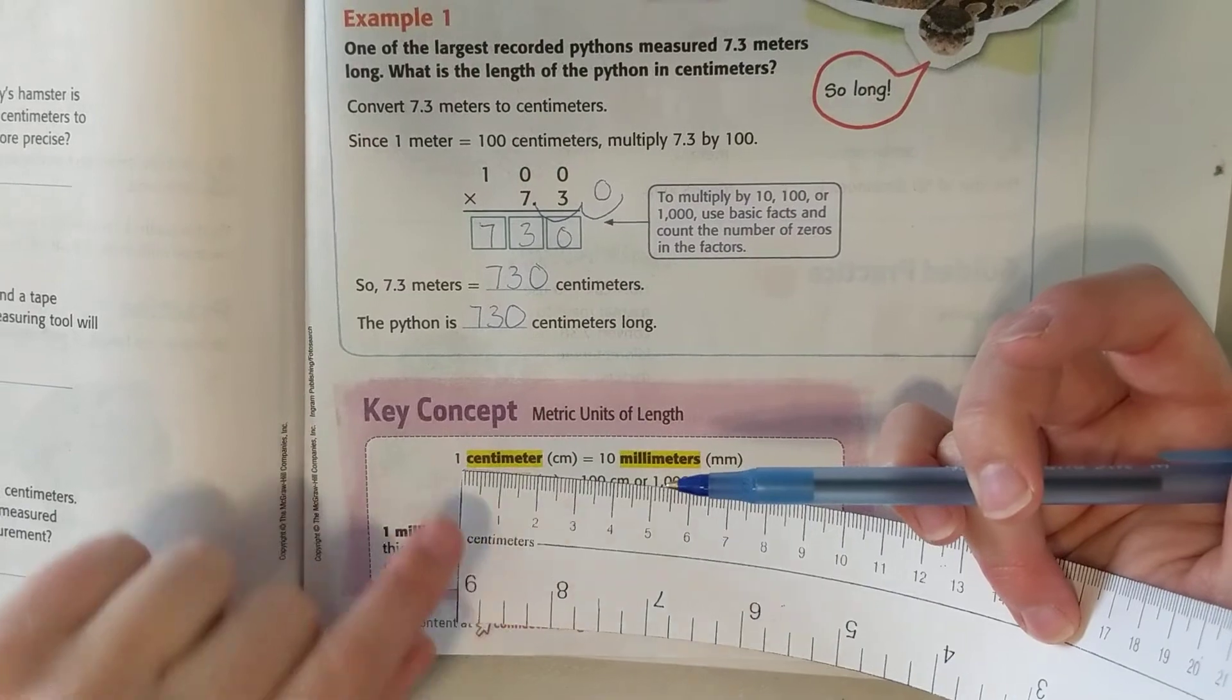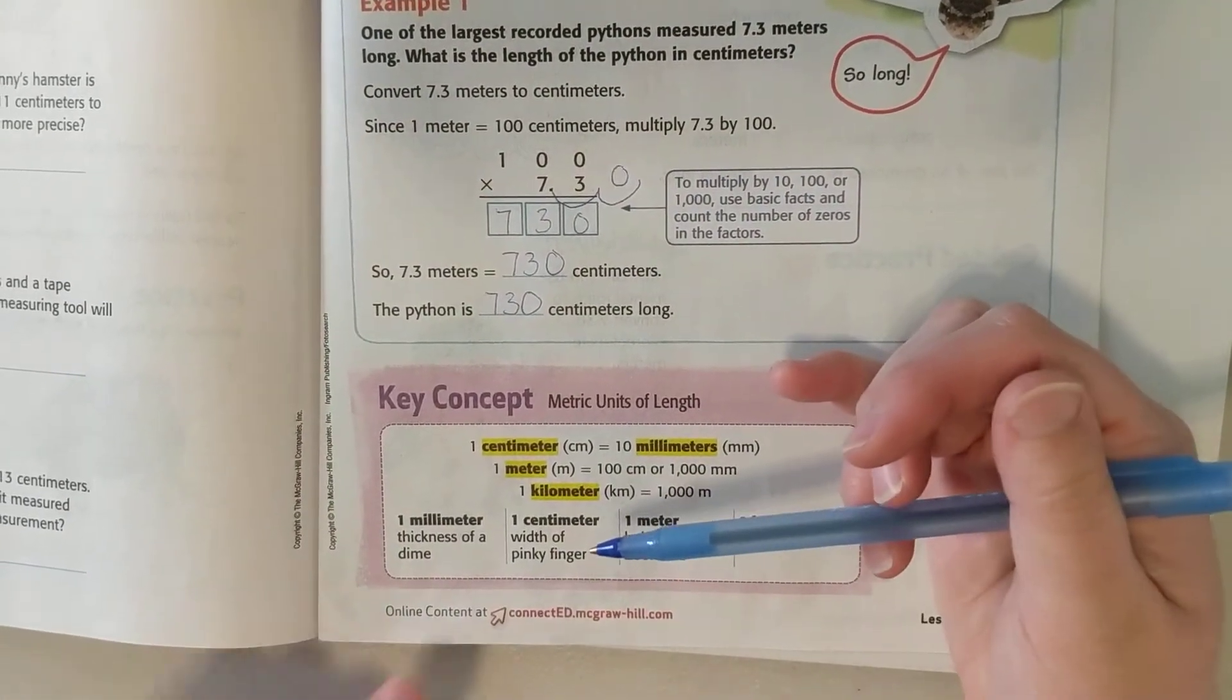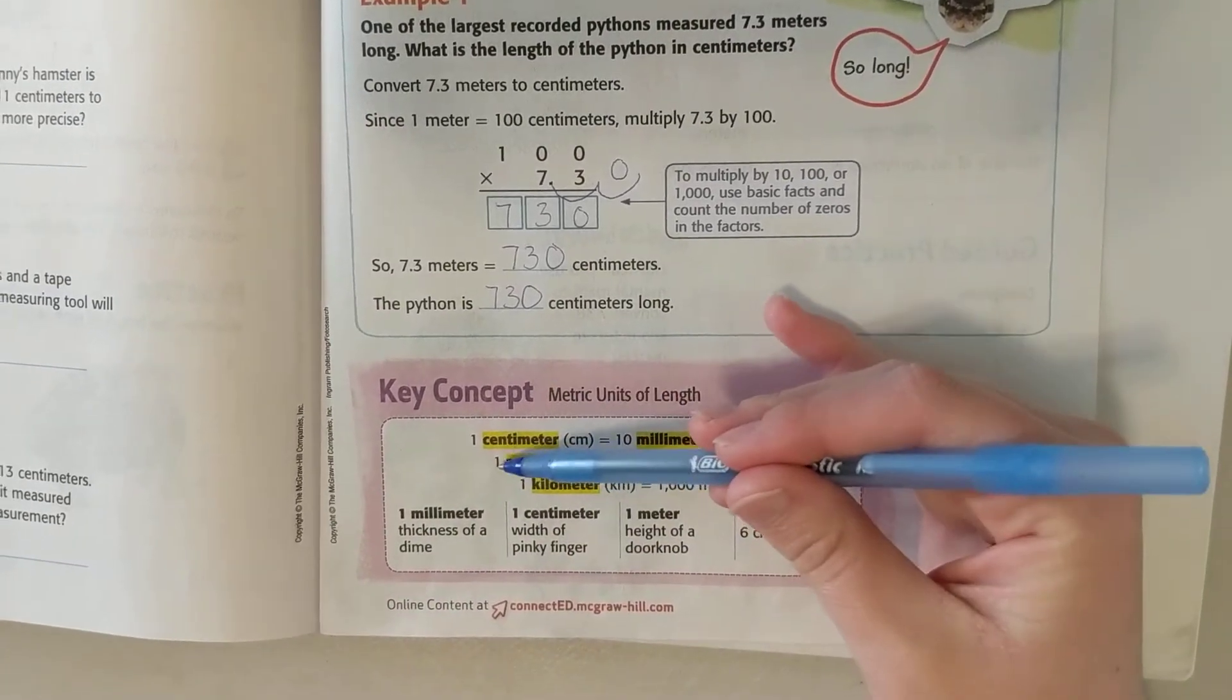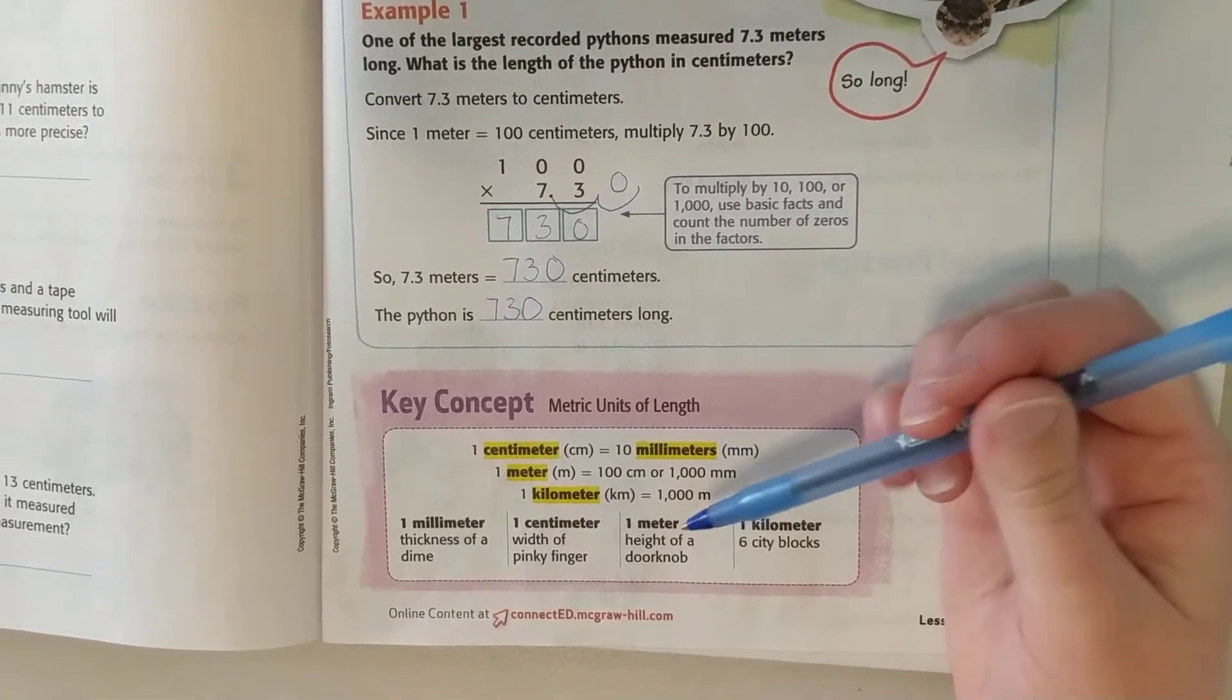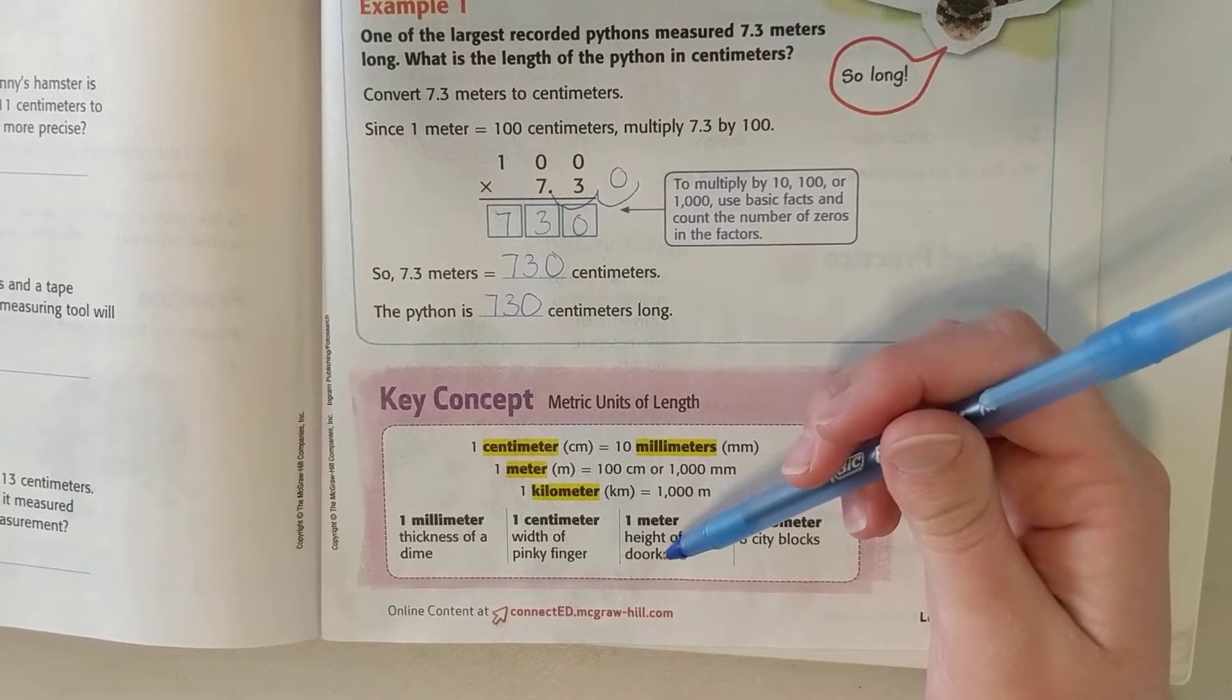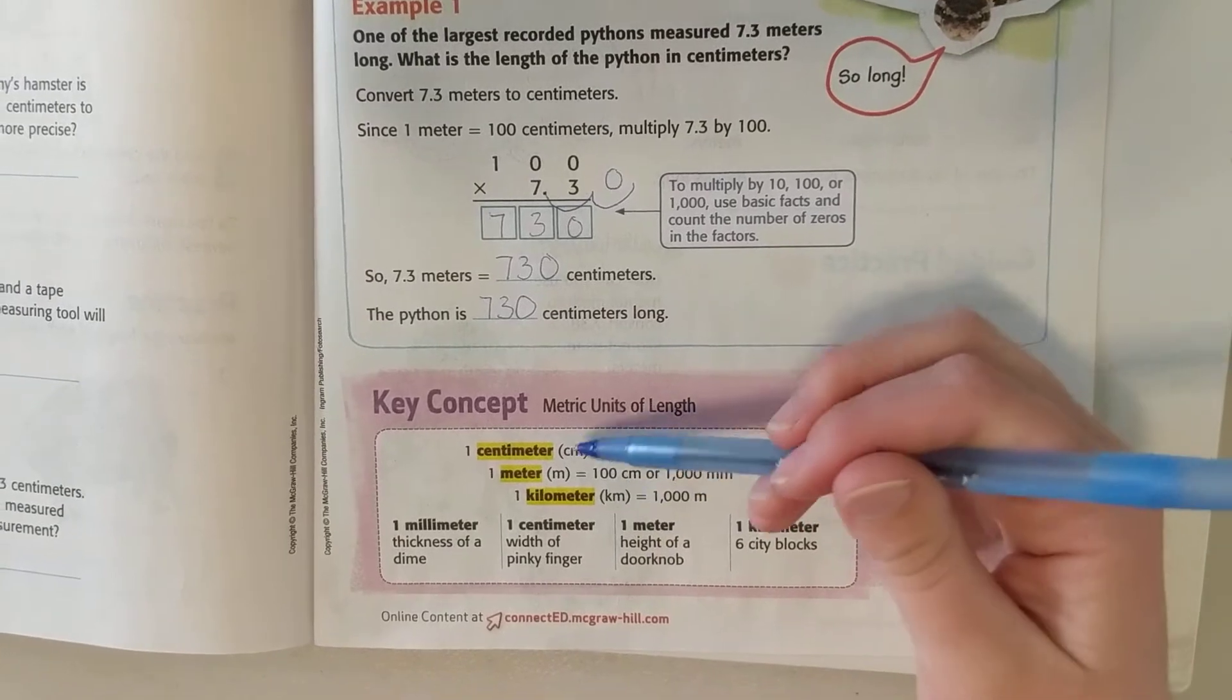The large ones, two, three are the centimeters. That is about the width of a pinky finger. A meter is 100 centimeters or 1000 millimeters. A meter is about the height of a doorknob. So if you measure from the floor to the door handle, that'll be about a meter.